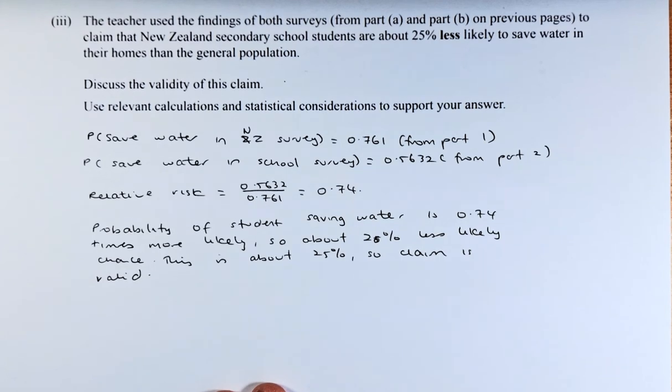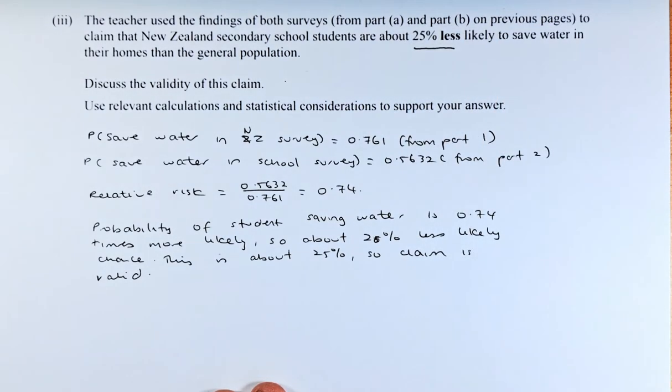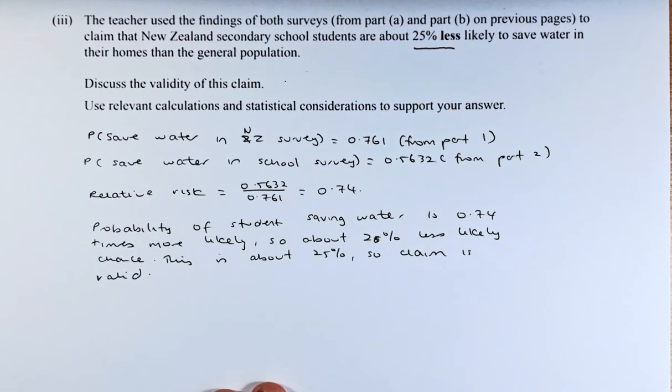So, probability of students saving water is 0.74 times more likely, so about 26% less likely chance. This is about 25% than what is mentioned here. And so, the claim that New Zealand secondary school population are about 25% less likely to save water in their home than the general population is actually valid and it is true.